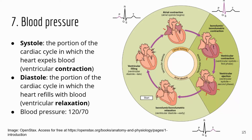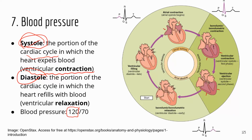Blood pressure is a pretty important indication of health. There are two terms: systole and diastole. Systole is the portion of the cardiac cycle where the ventricles are contracting. The ventricles are bigger and stronger because they have to pump blood further — either to the lungs or to the entire body. When they contract, that generates a pretty high pressure, especially the left ventricle, because the pressure has to be high enough to push blood throughout the entire body. That ventricular contraction generates the systolic pressure, which is the higher number in a blood pressure reading.